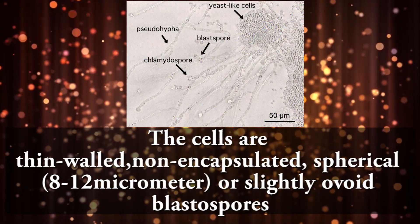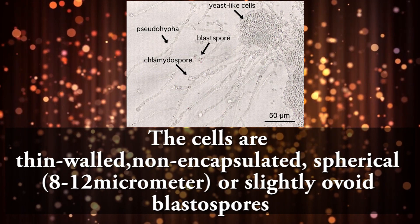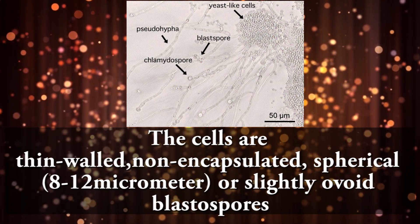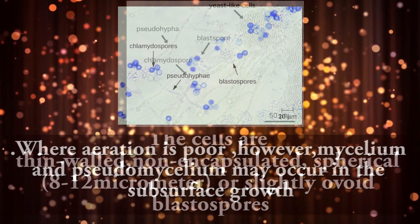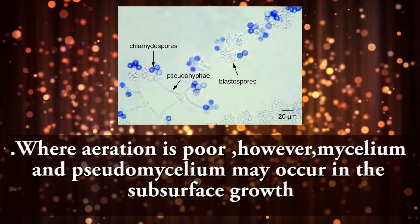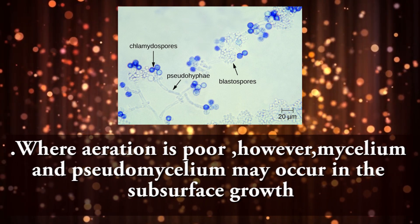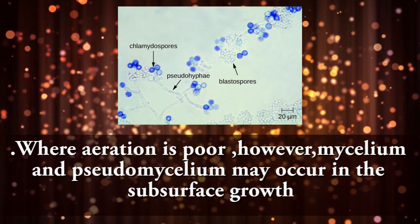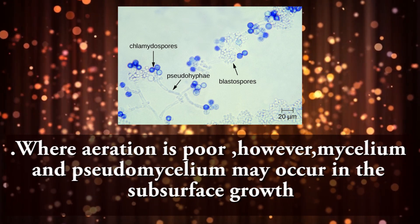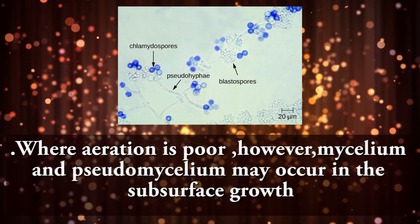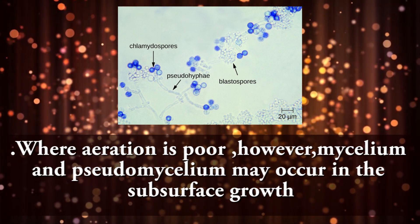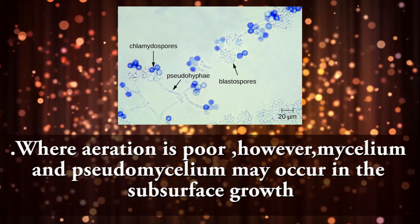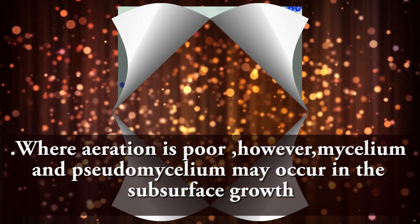The cells are thin-walled, unencapsulated, spherical or slightly oval blastospores, measuring 6 to 10 micrometres by 3.6 to 6 micrometres, where aeration is poor. However, mycelium and pseudomycelium may occur in the subsurface growth.